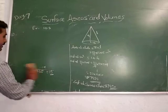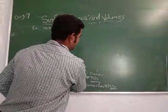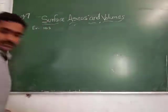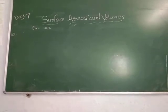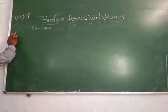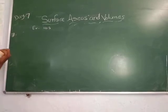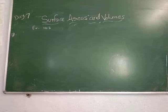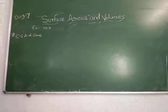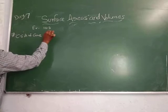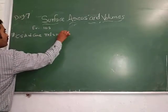Come to problem number 7. The curved surface area of the cone is given as 11 and 59 and 5 by 7 cm square. Area of its base is 254 and 4 by 7 cm square. Find its volume. Curved surface area of cone, according to our formula, pi R L equals 11 59 and 5 by 7.